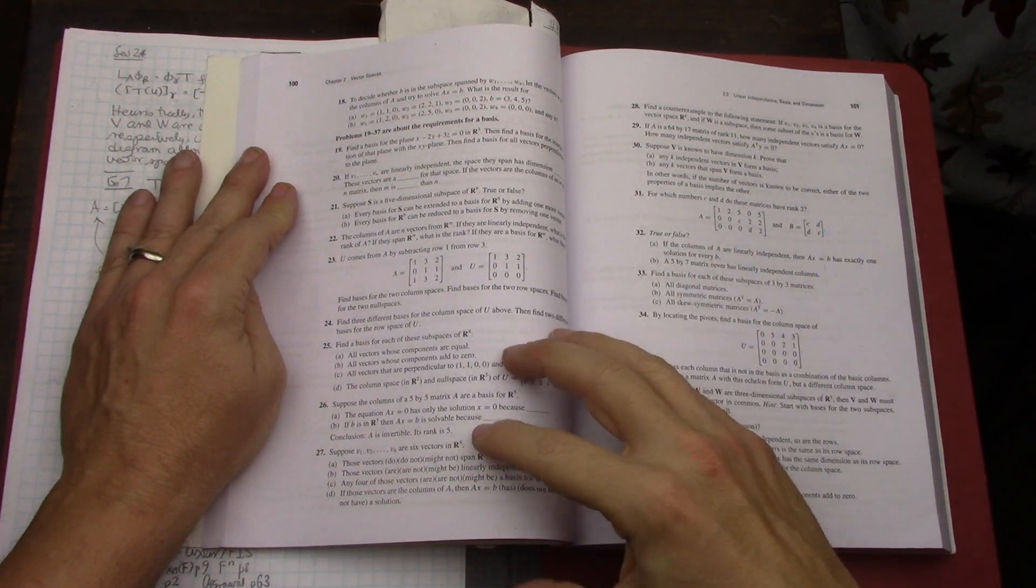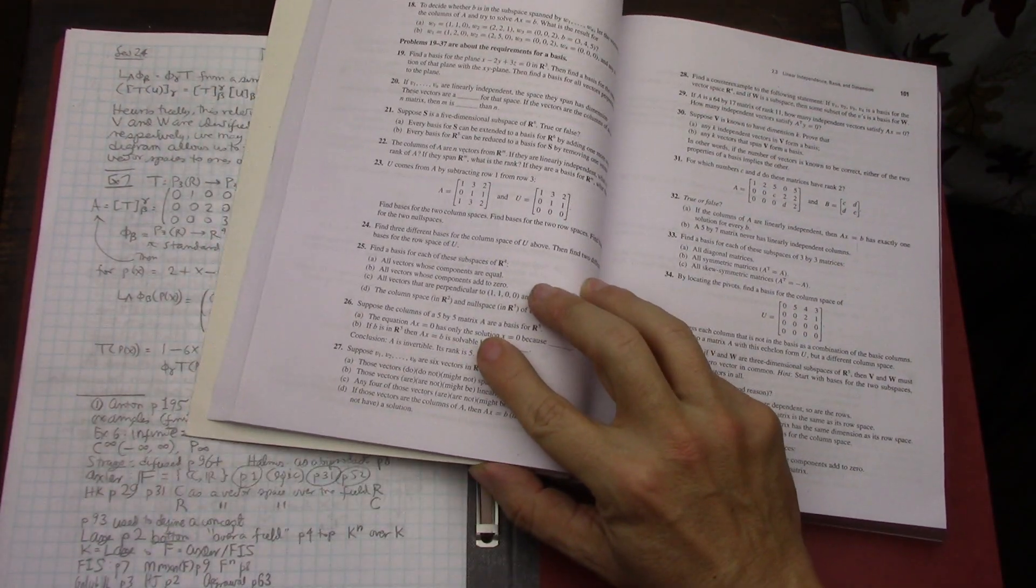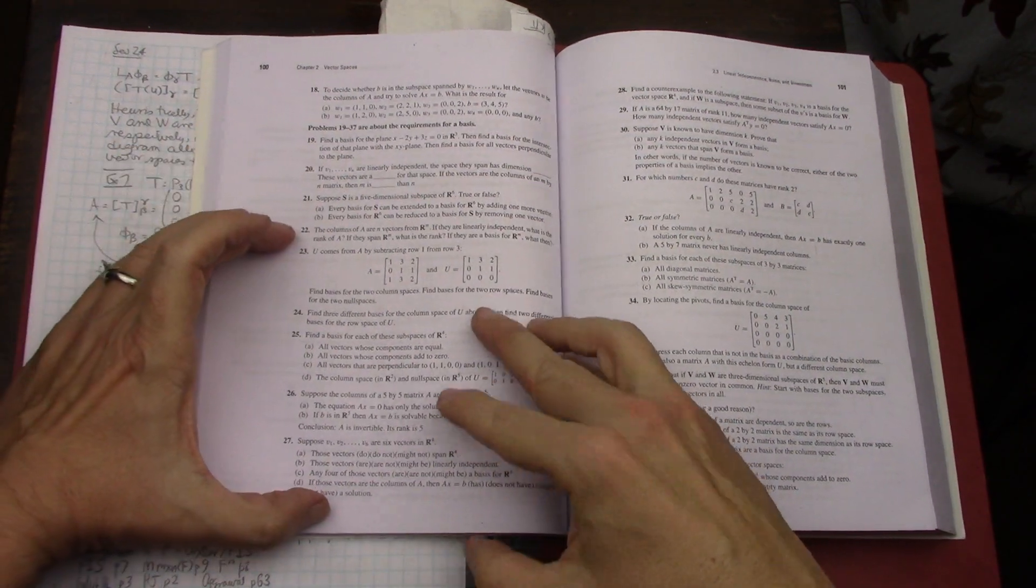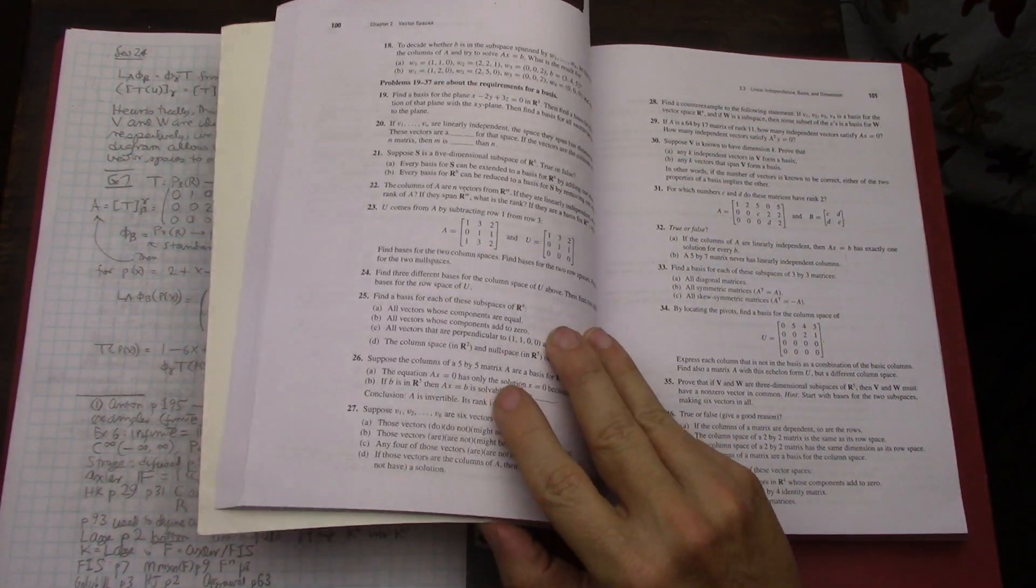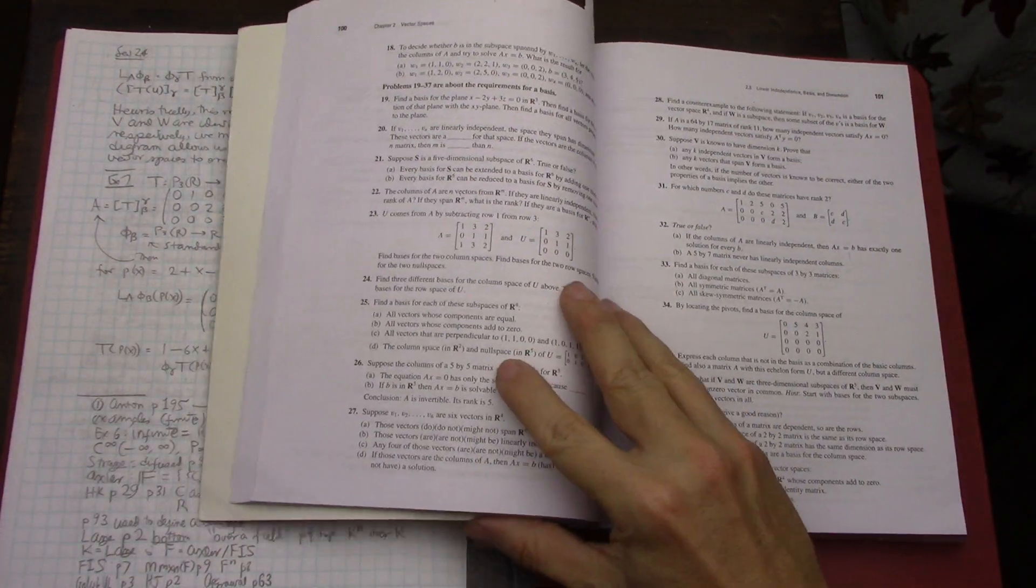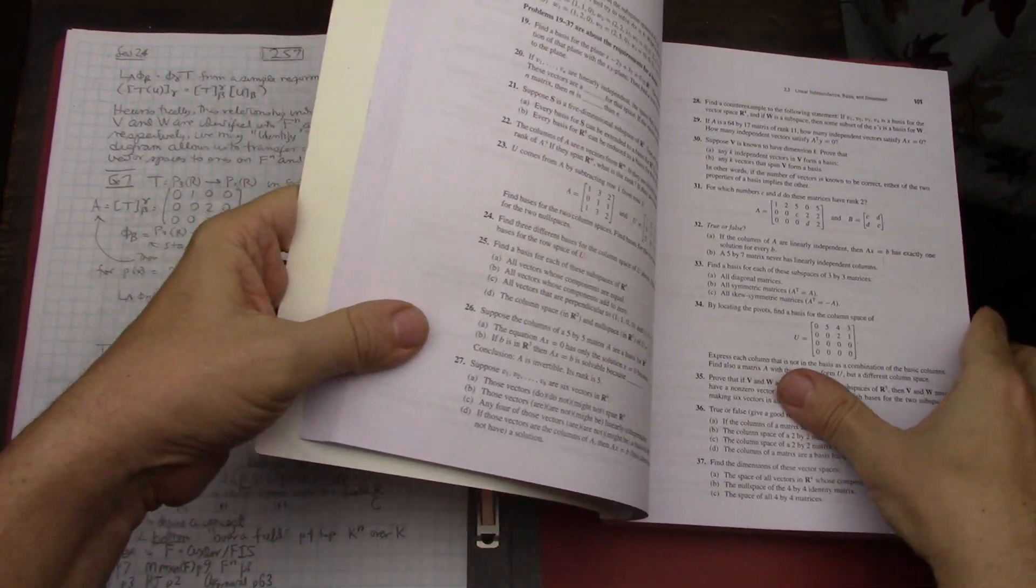That's just how he chooses to do it. So there really isn't a place in Strang where they're all, or many of them are listed as it was in the case of Anton. And so I call it a diffused sort of way of showing all these types of vector spaces.